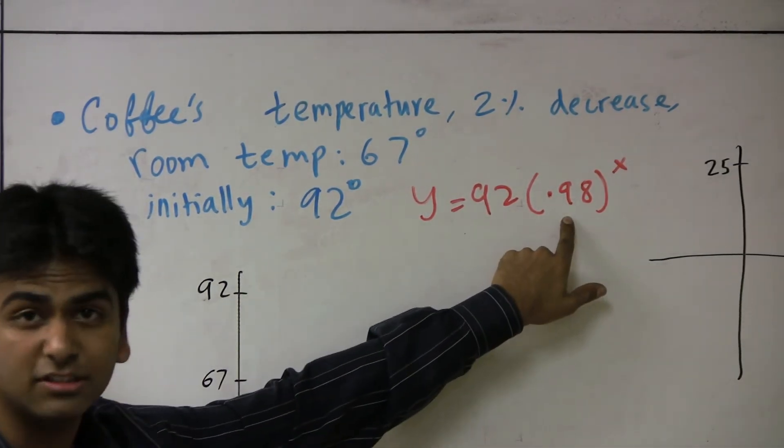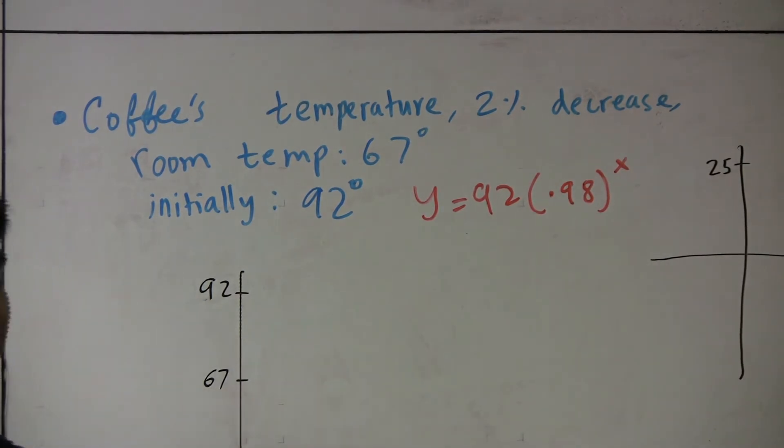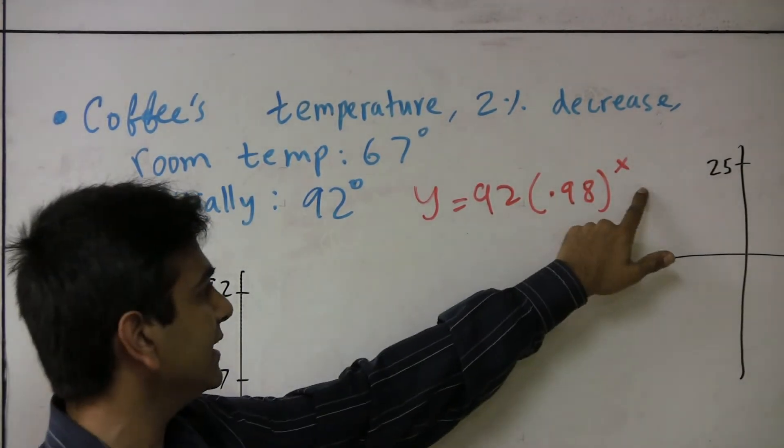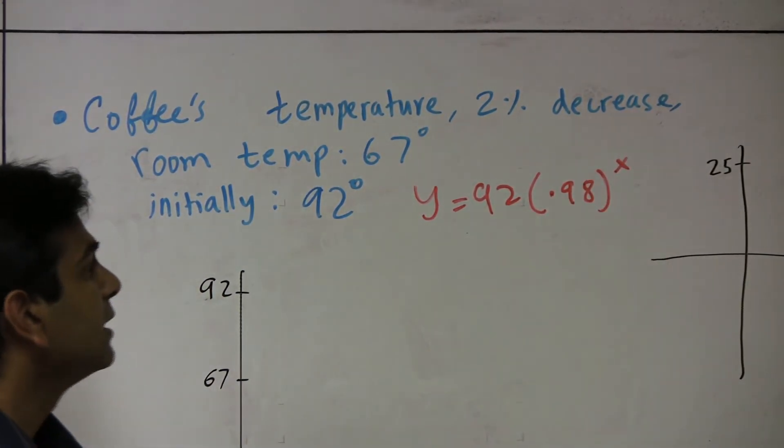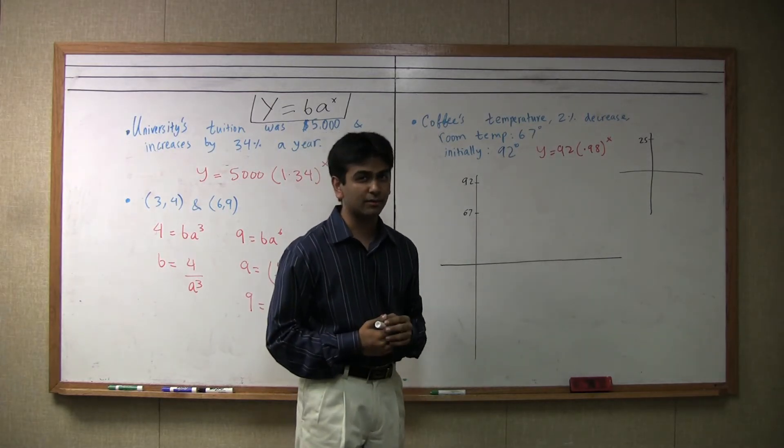This shows that it's decreasing by 2%, and this shows that the initial value was 92. The only problem is, as x goes up to infinity, y will go down to 0. But we want the eventual temperature to be 67 degrees, not 0 degrees. How do we get around this?